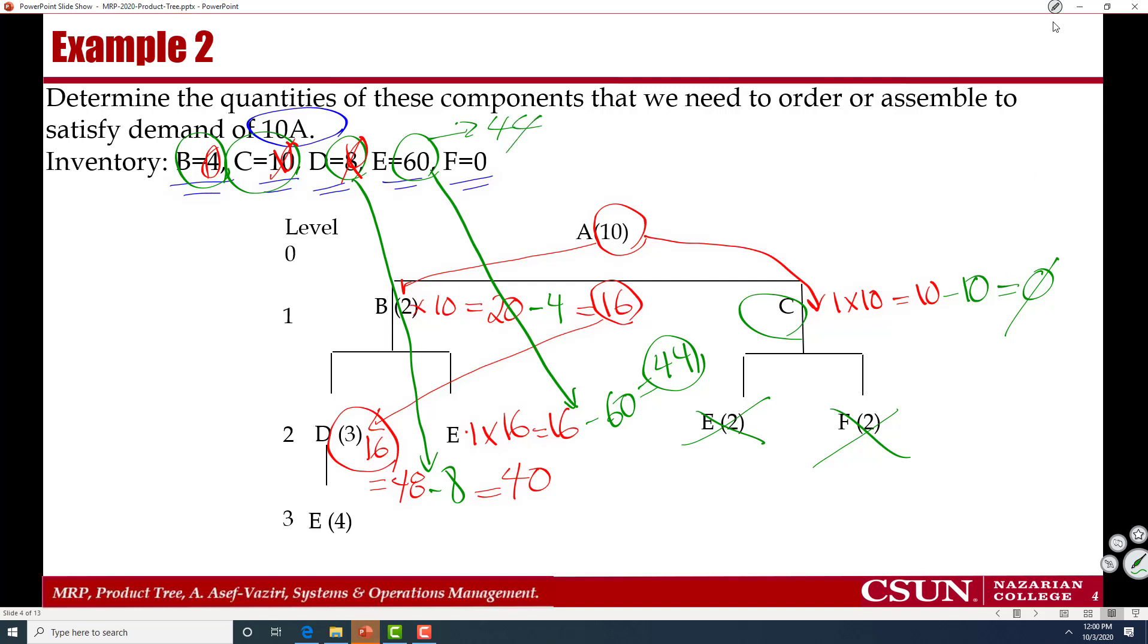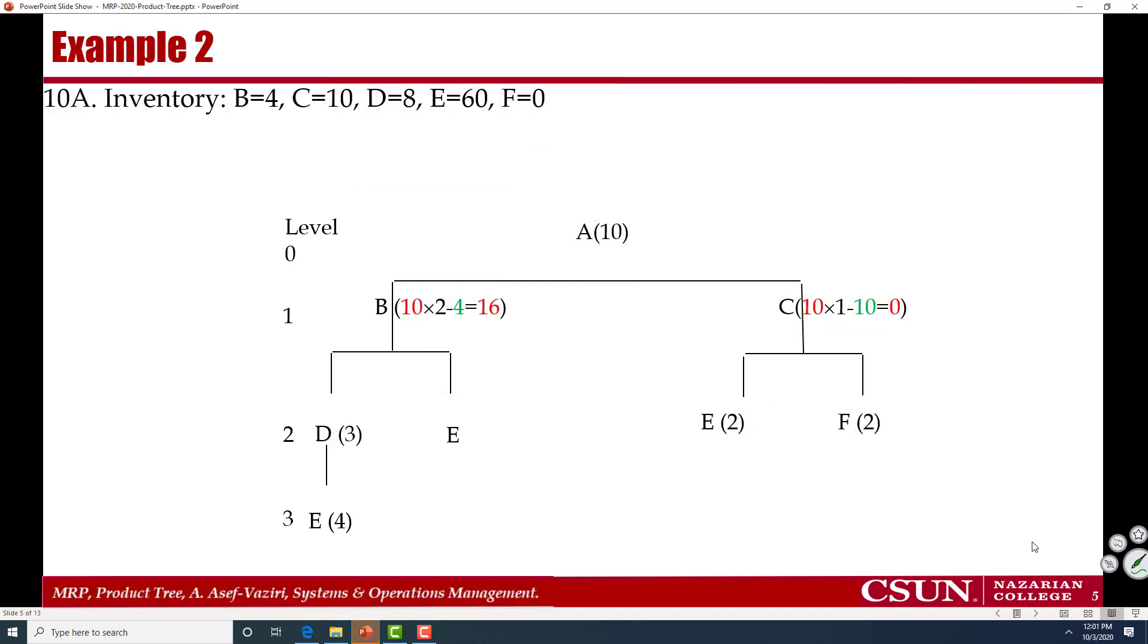Let me repeat the same thing. So that is the computation. 10 times 2. 10 times 1. Minus inventory. Minus inventory. 16 units of B is needed. And no C. Therefore, we are done with this.